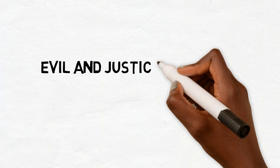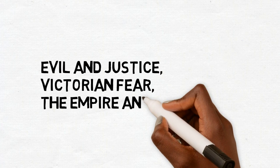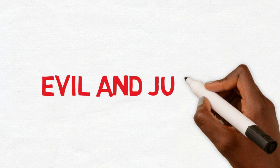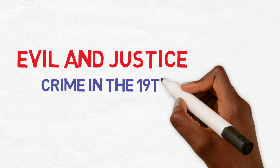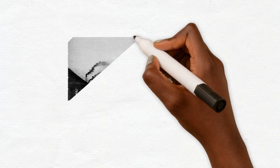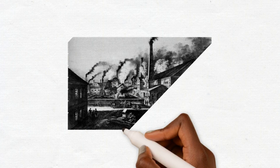The themes are: Evil and Justice, Victorian Fear, and Empire and Imperialism. The first theme we will look at is Evil and Justice. It is important to know about crime in the 1800s before we look at how Conan Doyle presents this theme.